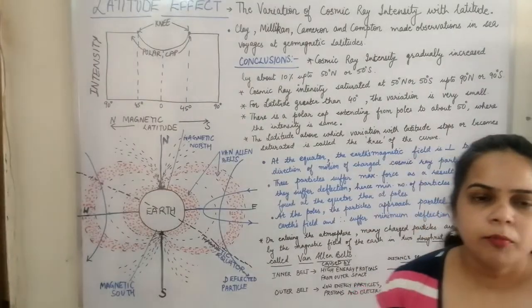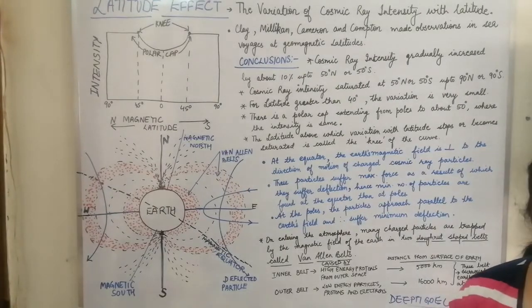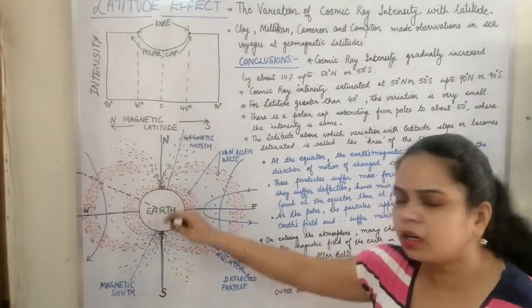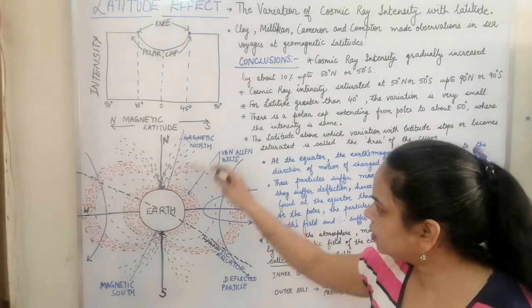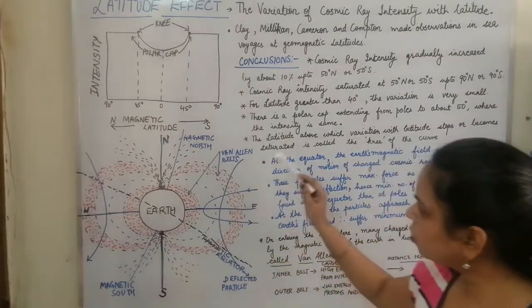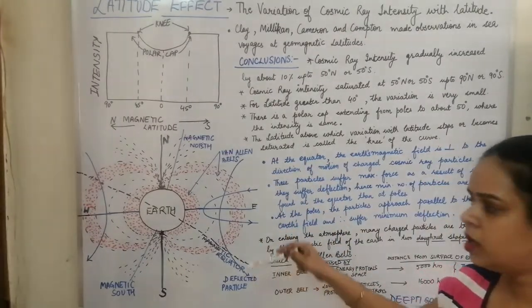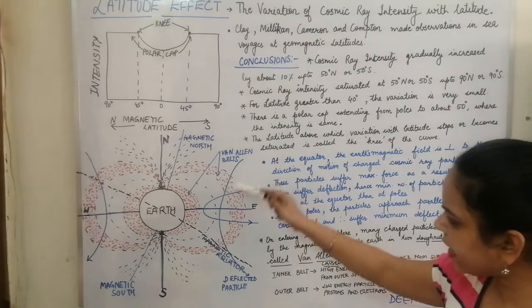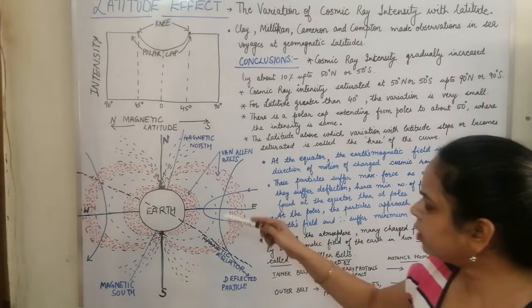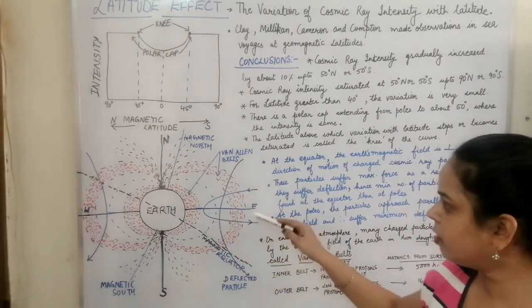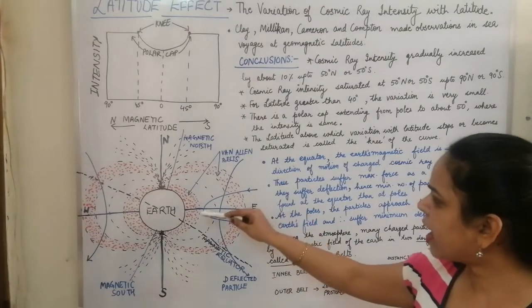These were the conclusions made from sea voyages at different latitudes. Next, they compared cosmic ray behavior at the equator versus the poles. The earth has north-south latitude lines and a magnetic north-south line, and an east-west direction. The particles' deflection lines show they were deflected most when they reached the equator and deflected minimum at the pole points.